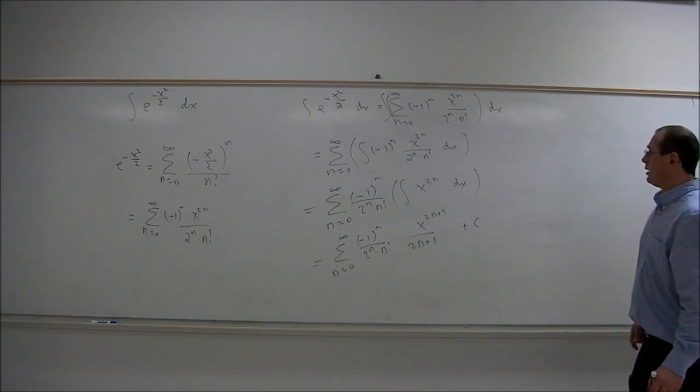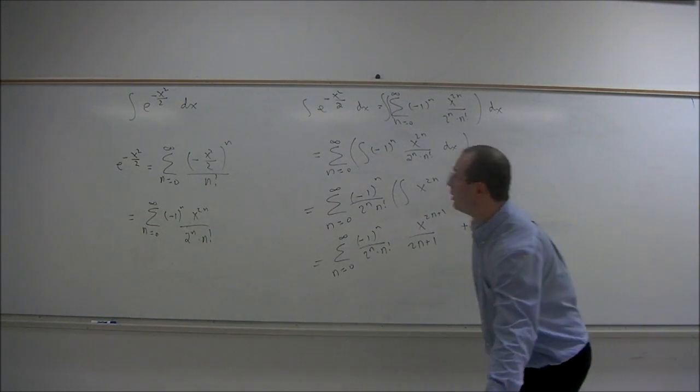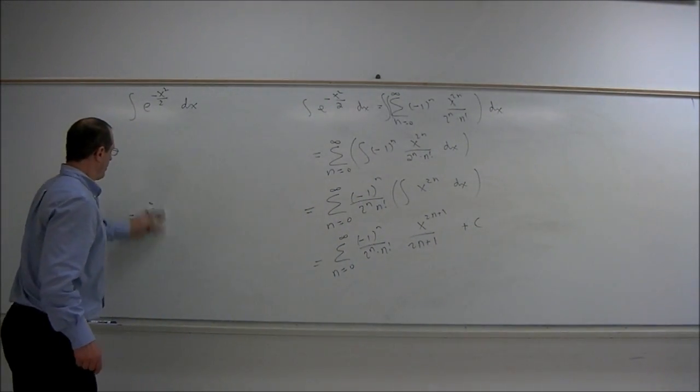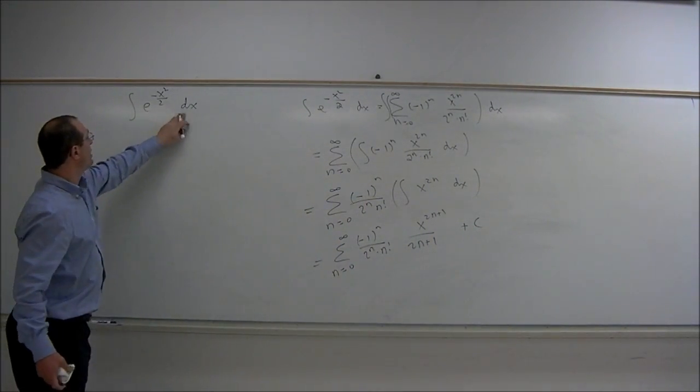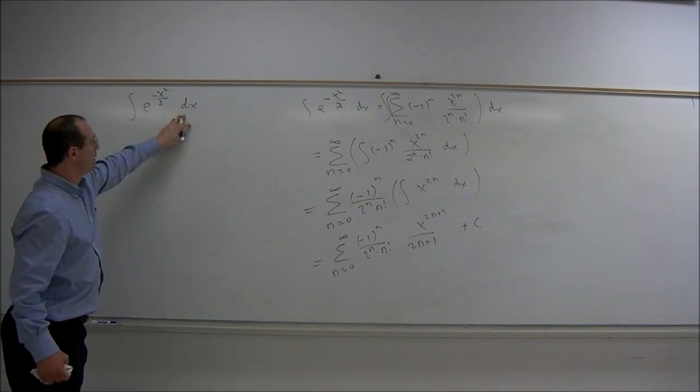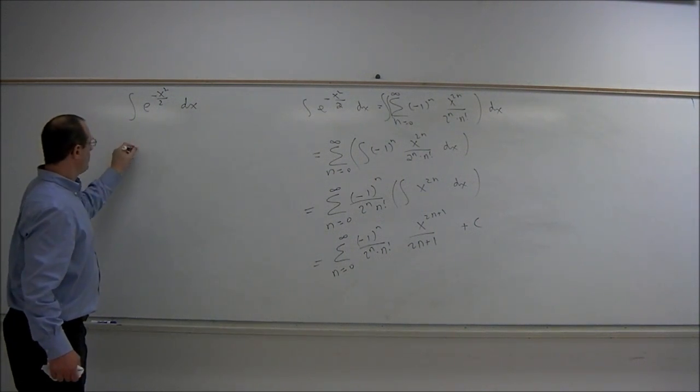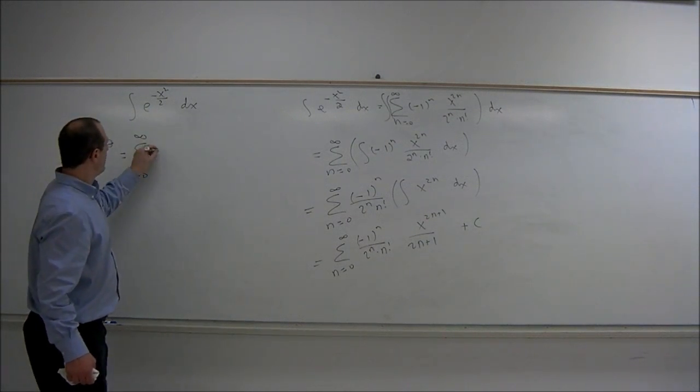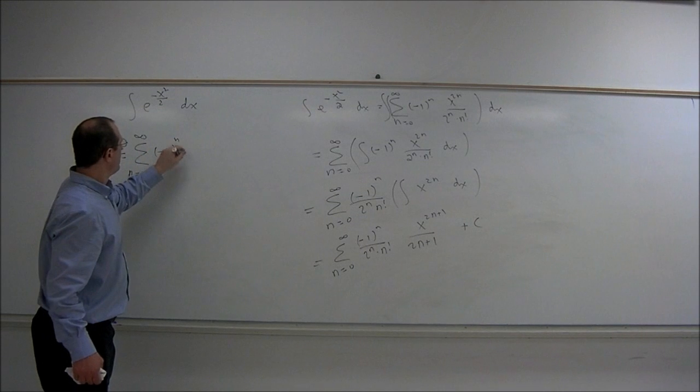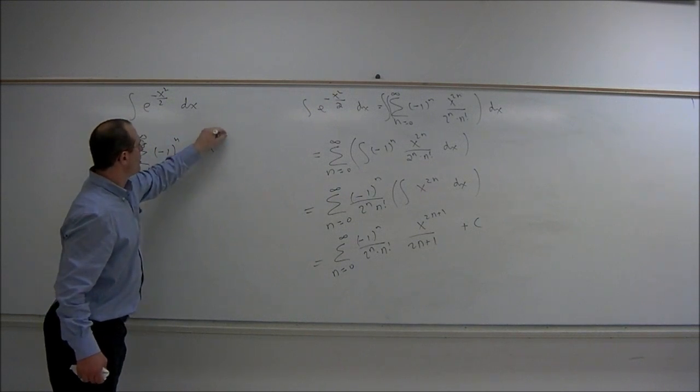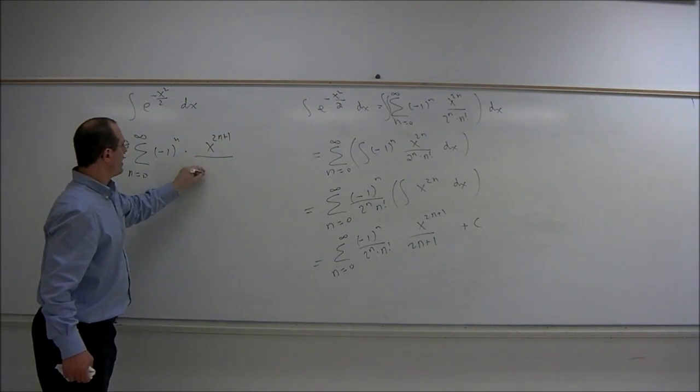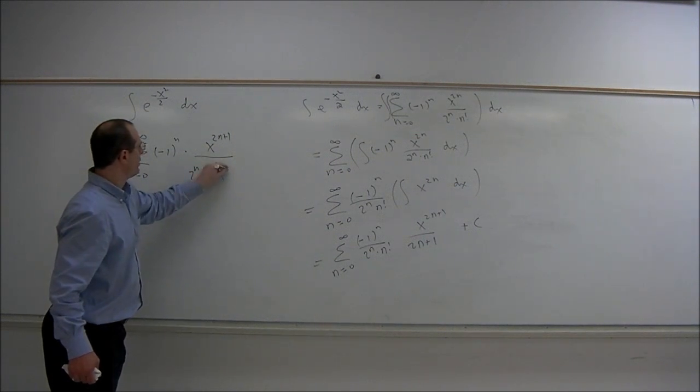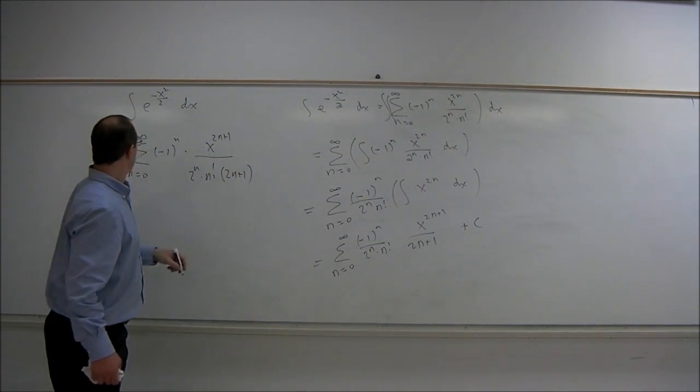So what we get is that the integral of e^(-x²/2) dx equals the summation n equals zero to infinity of (-1)^n · x^(2n+1) / (2^n · n! · (2n+1)) + C.